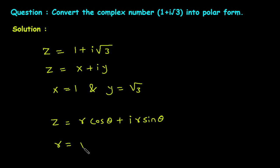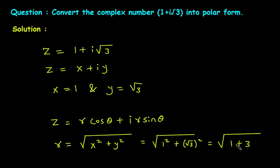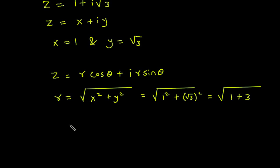r is equal to the square root of x squared plus y squared. Here x squared is 1 squared and y squared is root 3 squared, so this will be 1 plus 3. The square root of 4 is equal to 2, therefore r is equal to 2.